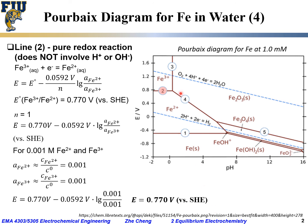Since the activities of Fe²⁺ and Fe³⁺ are equal, their ratio is 1 and the log term equals zero. The electrode potential for this redox pair at this concentration and 25°C is therefore still 0.770 volt versus SHE. This is the location of Line 2 in the Pourbaix diagram — for a given pH, if the potential is more negative than 0.770 V, Fe²⁺ is stable; if more positive, Fe³⁺ is more stable.